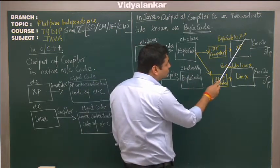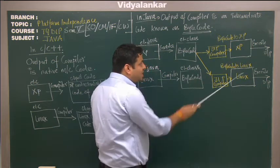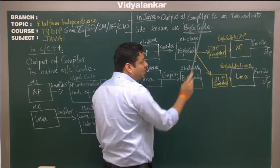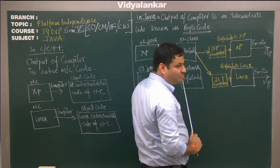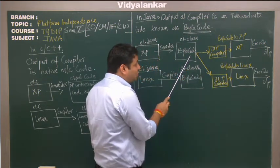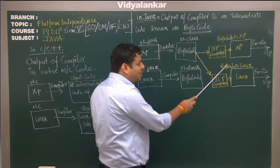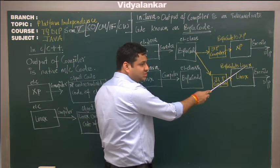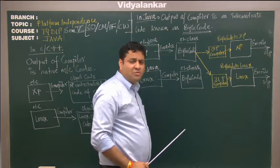Now what it does is it converts the bytecode to native machine code. So a JIT compiler on XP converts the bytecode to XP understandable code which can be executed and output can be obtained. Now same bytecode, when I try to execute on Linux, the JIT compiler converts this bytecode to Linux understandable code which can be executed to generate the output.